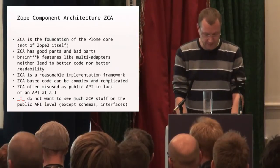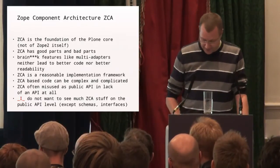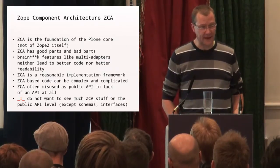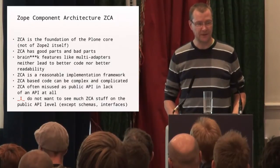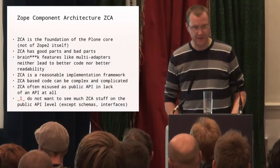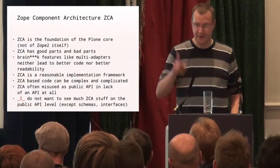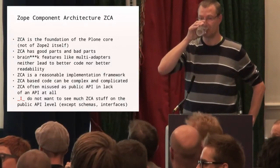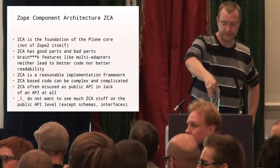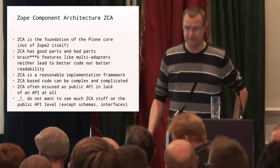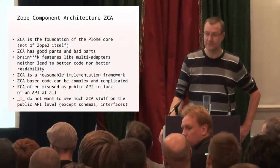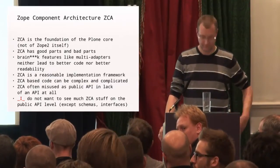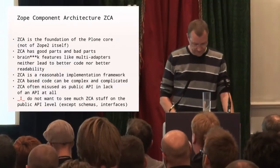The ZCA is a reasonable implementation framework, but the code can be complex and complicated. In many parts of Plone, the ZCA is fully exposed to the developer and, in my opinion, partly misused as an API. Pyramid is using the ZCA internally, and I've been using Pyramid for over a year and a half and you don't see it in Pyramid — it's hidden away. It has nice APIs over the ZCA and that works beautifully. The problem is exactly that in Plone you have to deal with the ZCA in your day-to-day work.